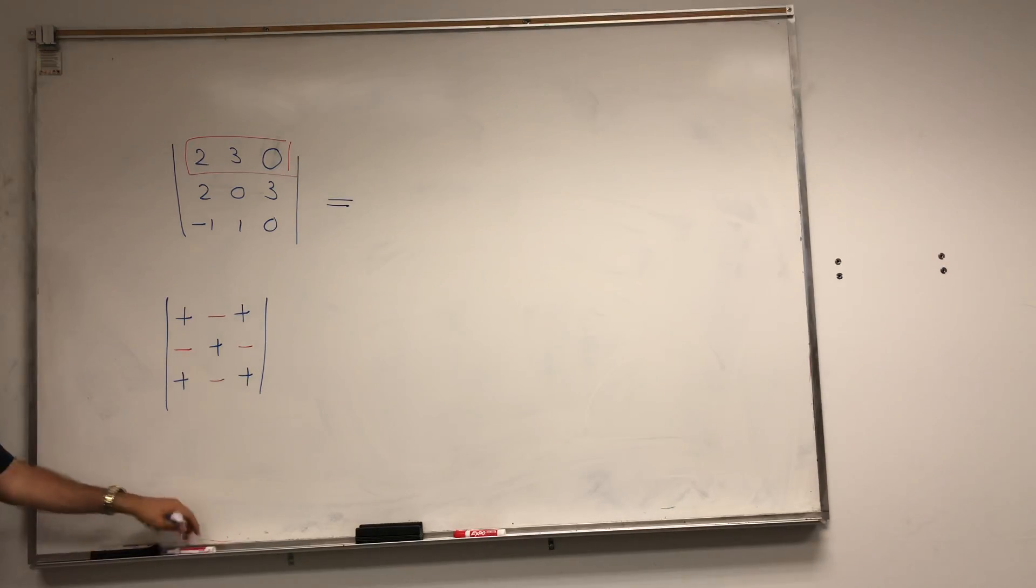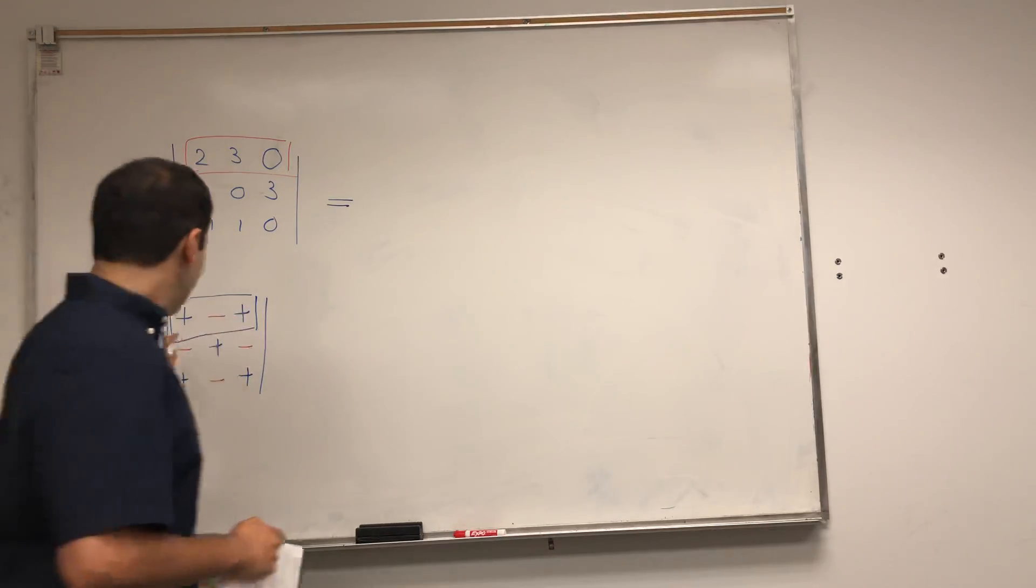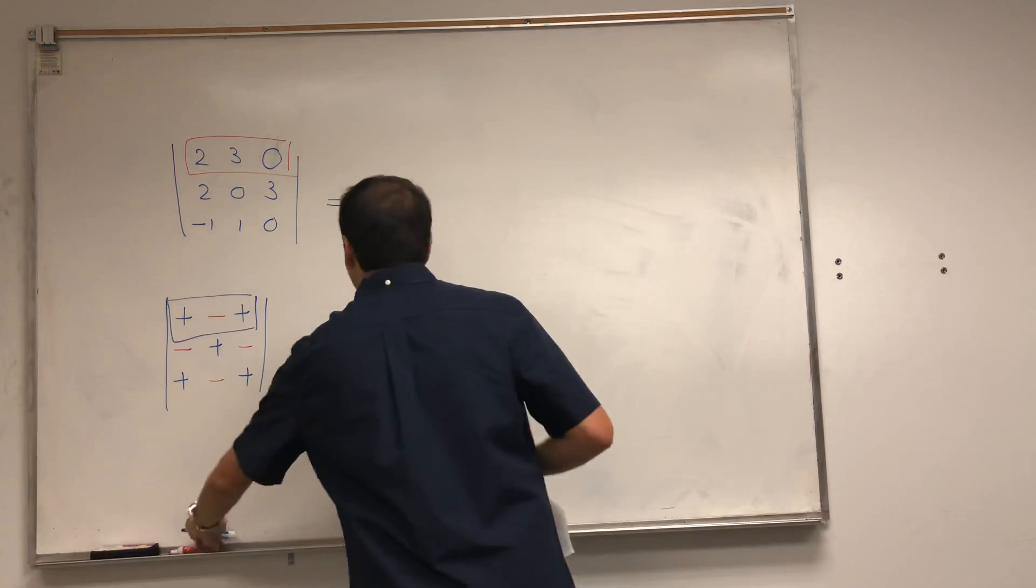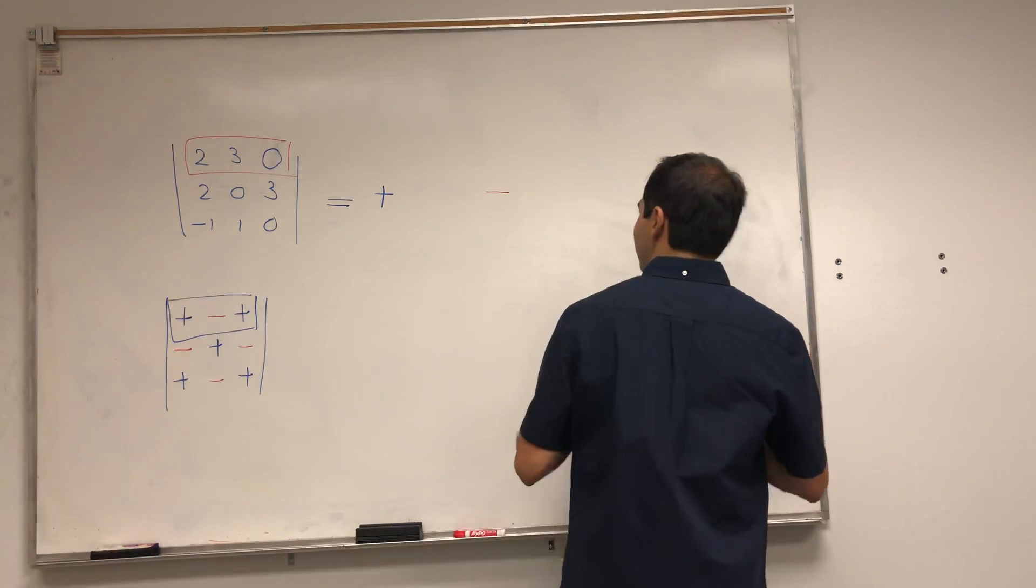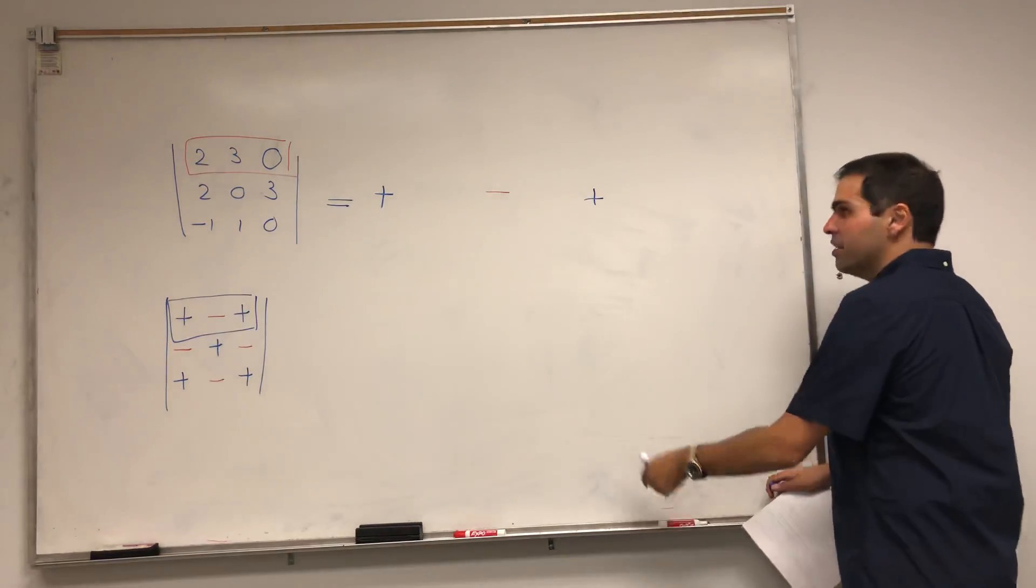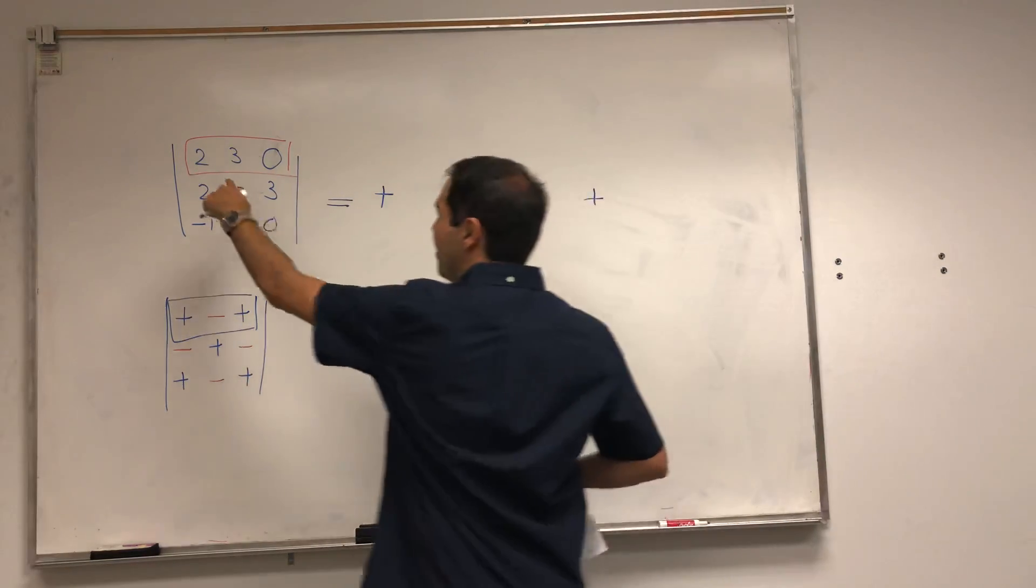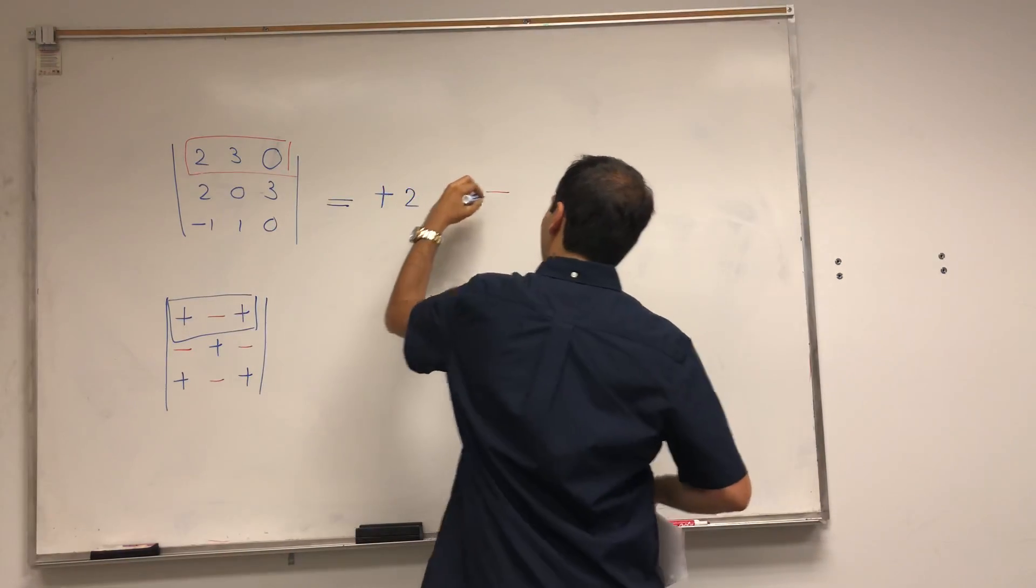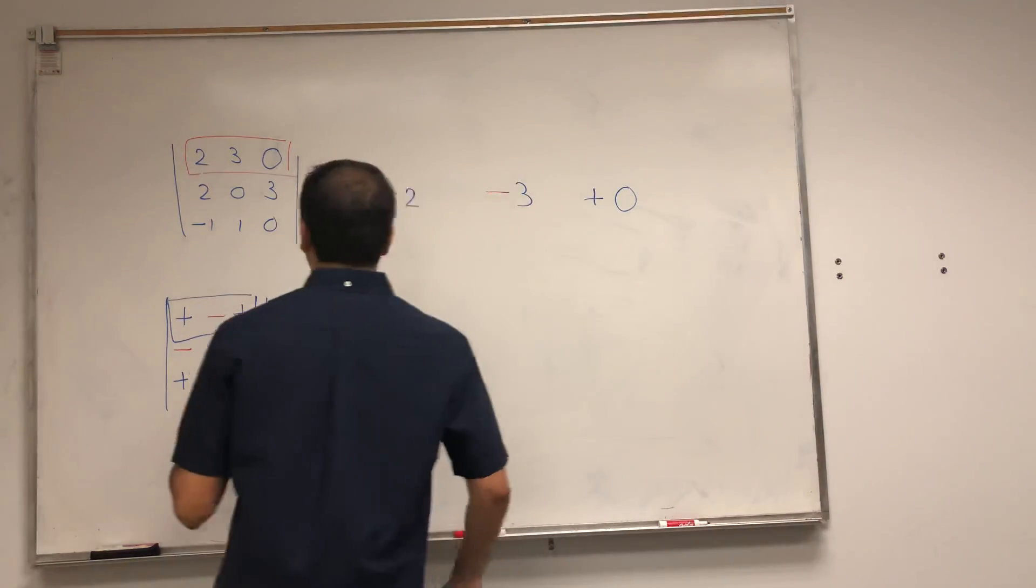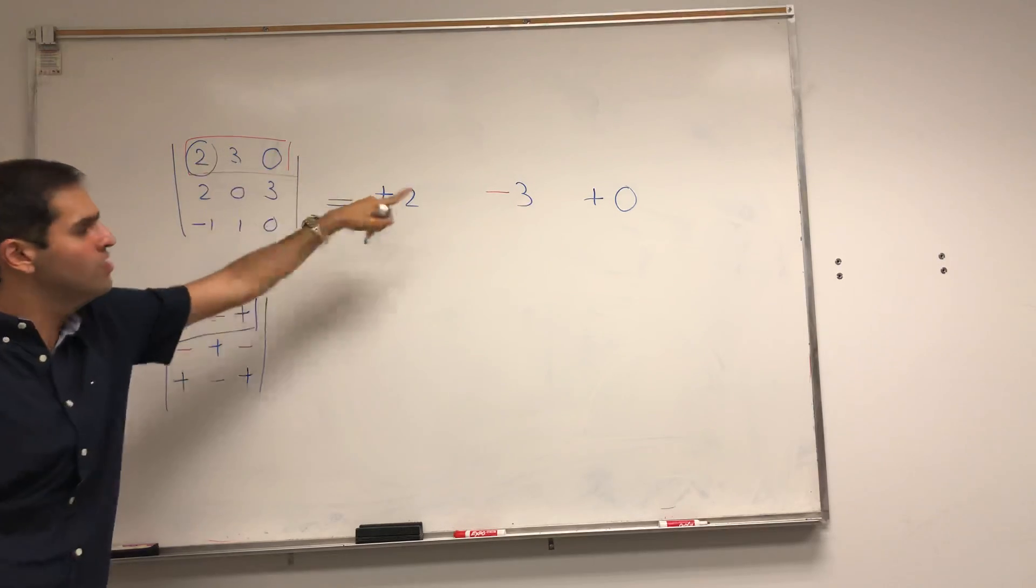All right, and once you make your decision, in this case the first row, plus, minus, plus, it means that your determinant is plus something, minus something, plus something. And it turns out the stuff next to the plus is, you put a plus two, minus three, and a plus zero. So again, plus, minus, plus, you put the stuff, you know, all the numbers here.